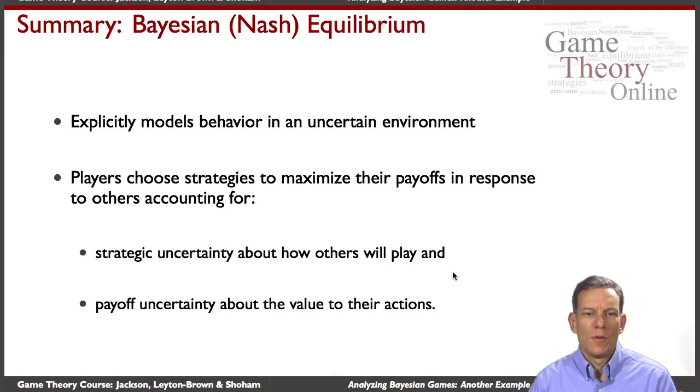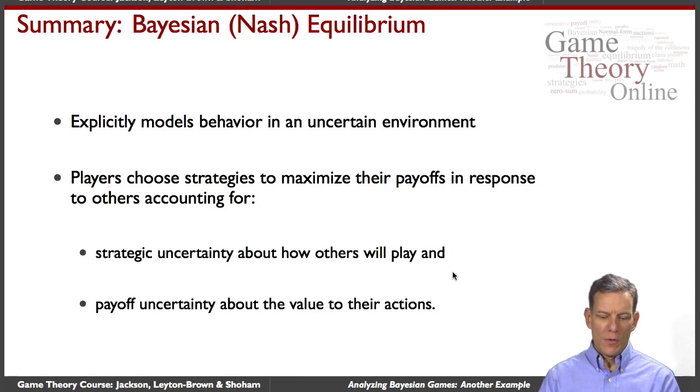So summary of Bayesian Nash equilibria, what have we got? It's a model that explicitly captures uncertain environments and players choose strategies. Again, equilibrium notions so you're maximizing your payoffs in response to uncertainty about both how other individuals are going to play and what the payoffs are from different actions. So it's a very powerful tool and one that has many applications, some of which we'll see in some of the added lectures. Take care.